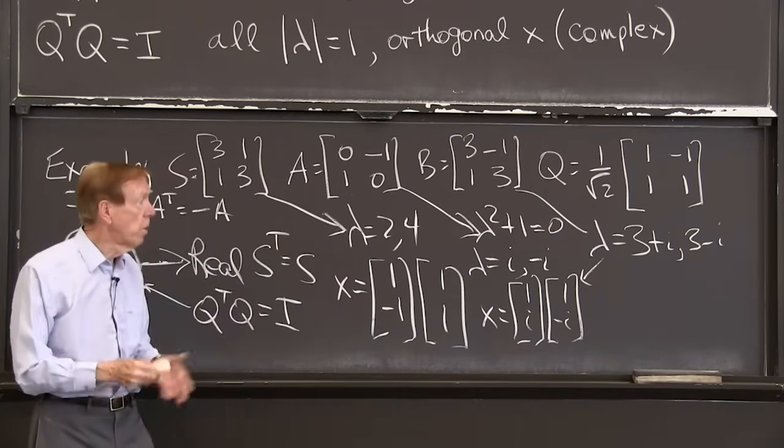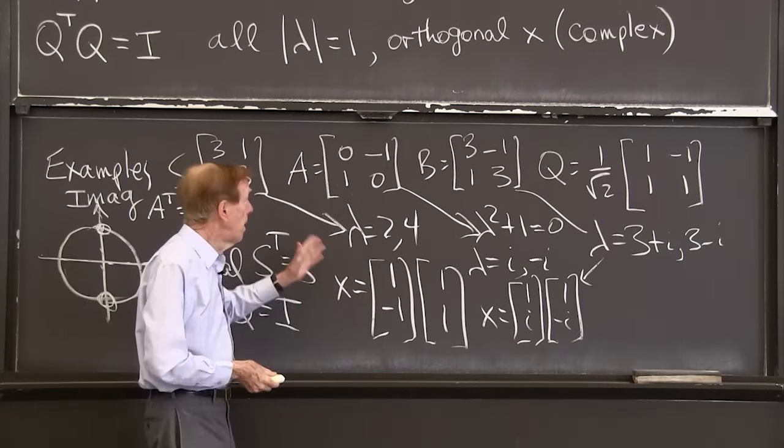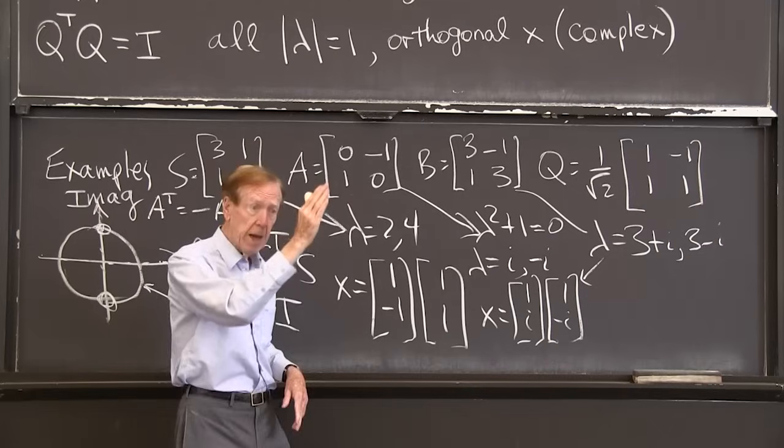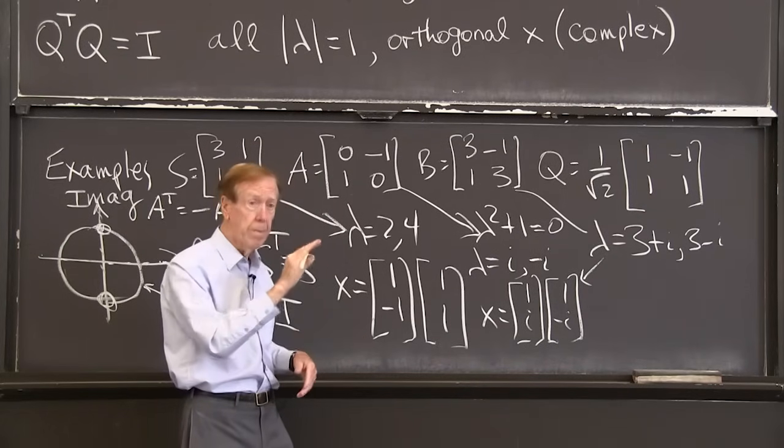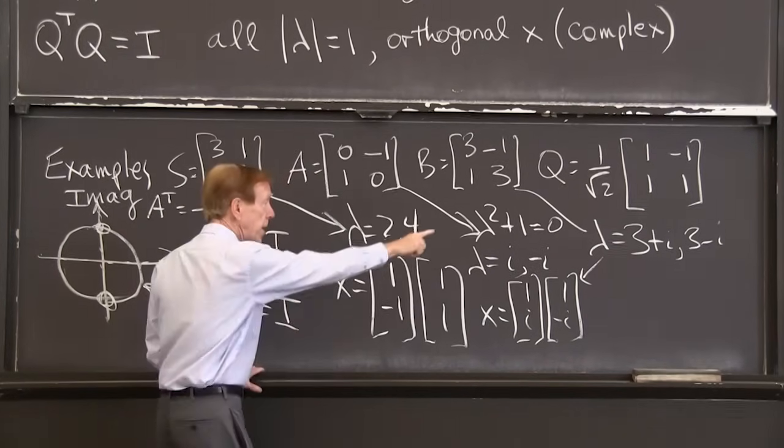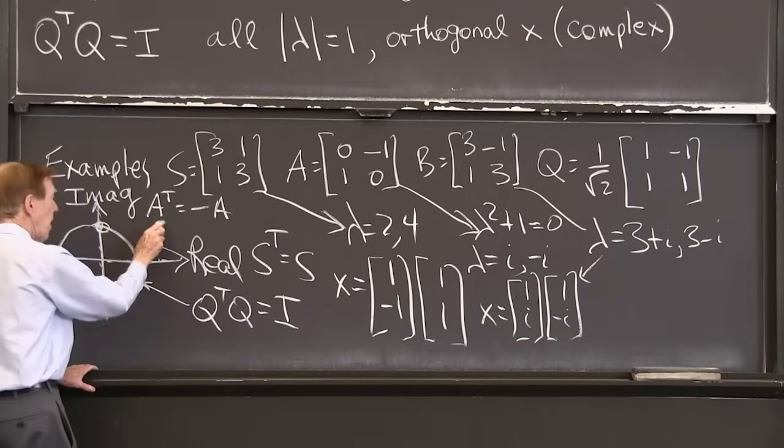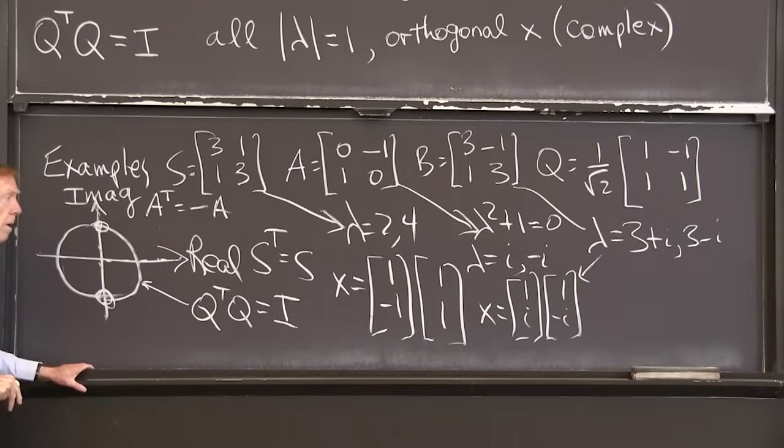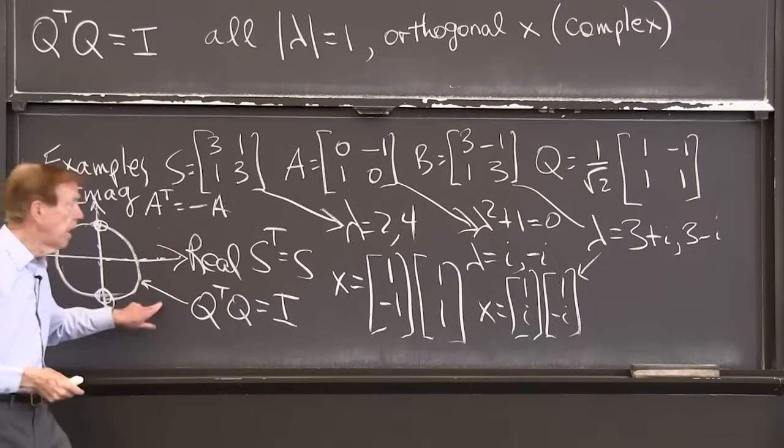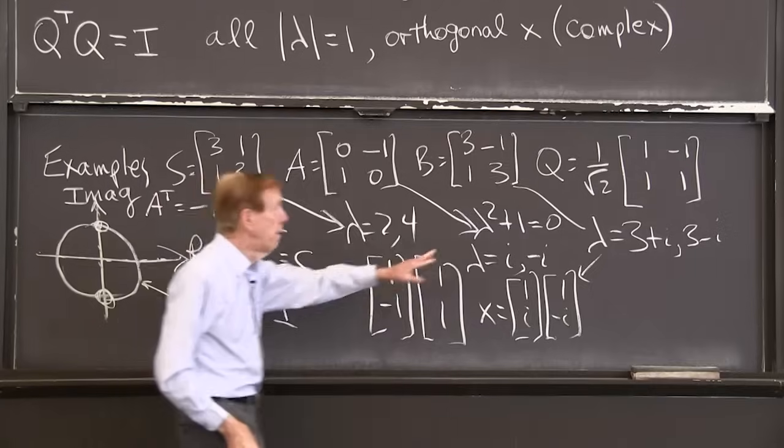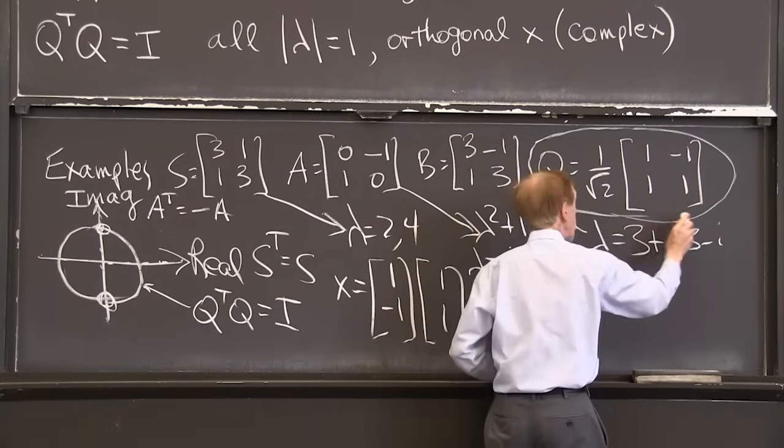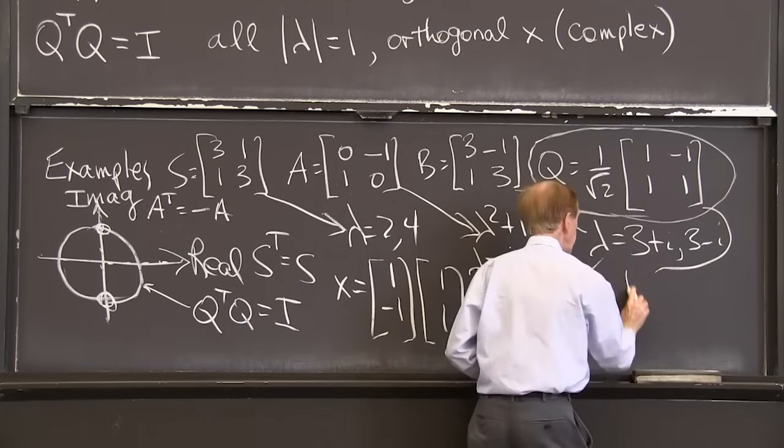So that's a complex number. That matrix was not perfectly anti-symmetric, not perfectly symmetric. So that gave me 3 plus i somewhere not on the axis or that axis or the circle, out there, 3 plus i and 3 minus i. And finally, this one, the orthogonal matrix. What are the eigenvalues of that?